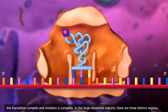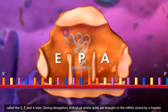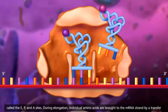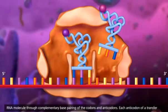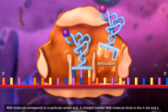In the large ribosomal subunit, there are three distinct regions called the E, P, and A sites. During elongation, individual amino acids are brought to the messenger RNA strand by a transfer RNA molecule through complementary base pairing of the codons and anticodons. Each anticodon of a transfer RNA molecule corresponds to a particular amino acid.